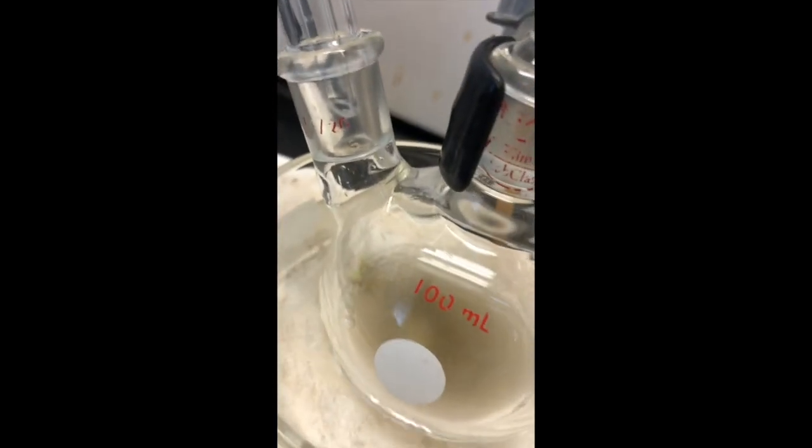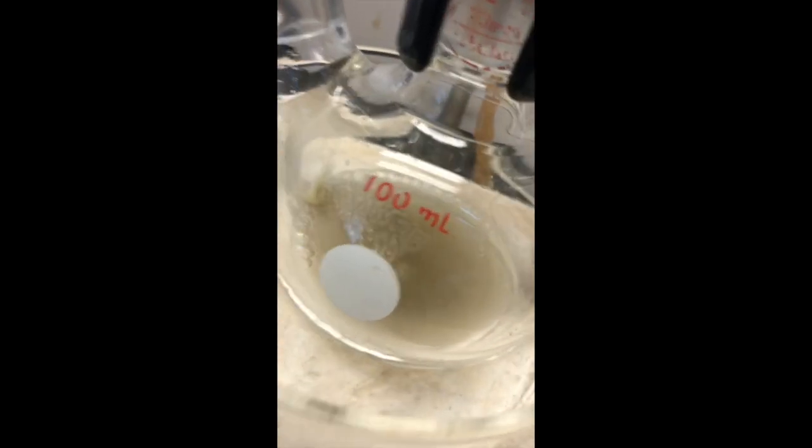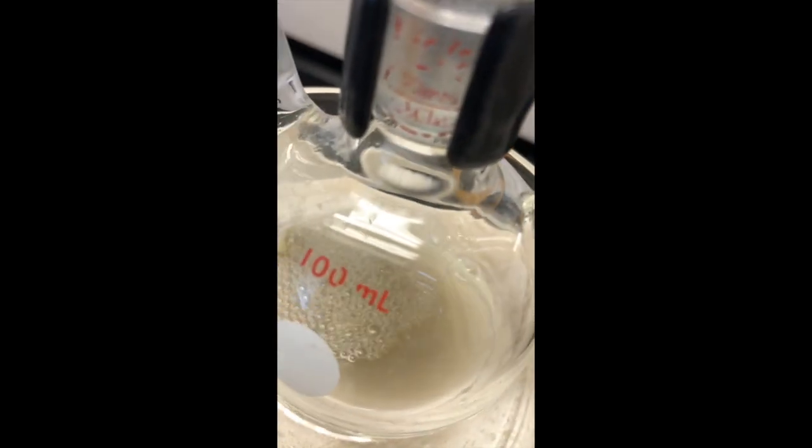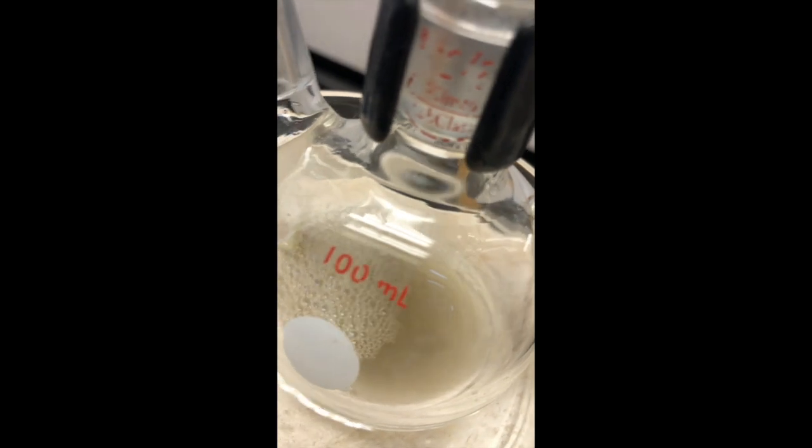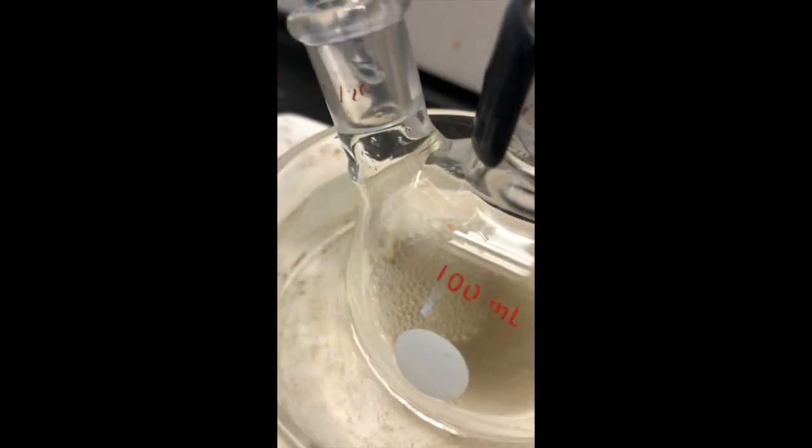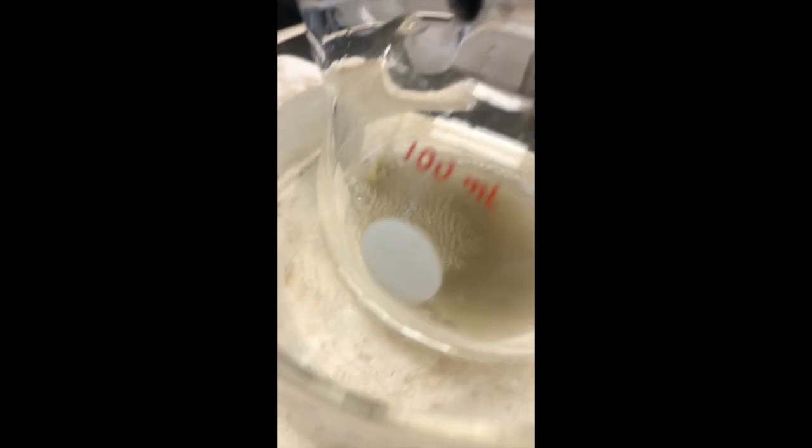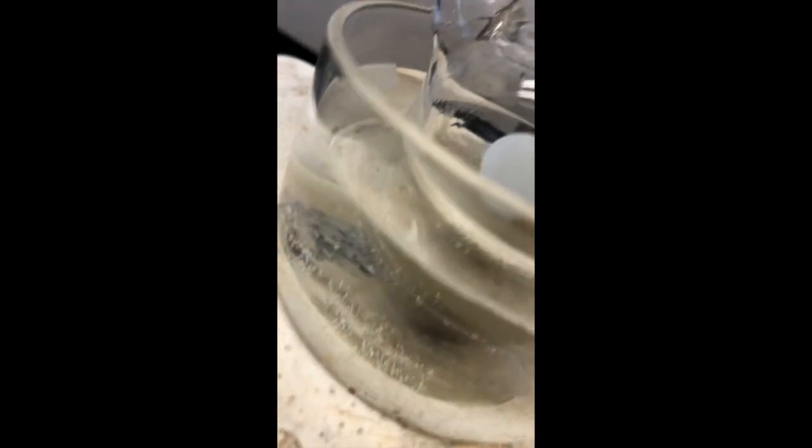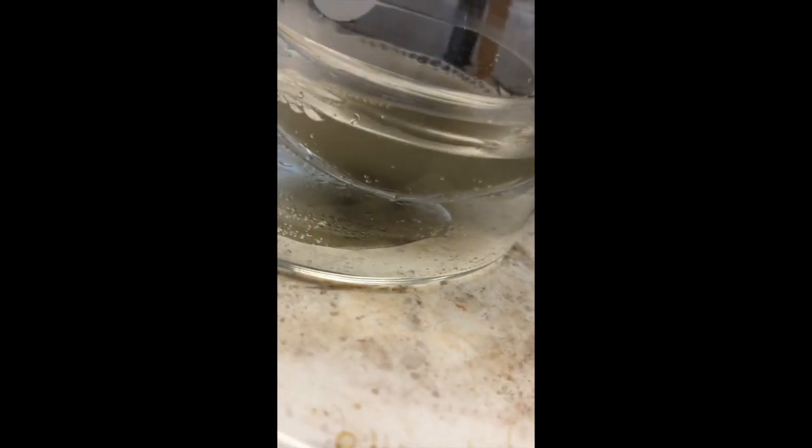If you look at that now, the stir bar seems to be moderately stuck. I turned it off and turned it back on again. So it's getting stuck in some sort of ooze at the bottom a little bit. But we have formation of quite a bit of now whitish solid that's happening there.